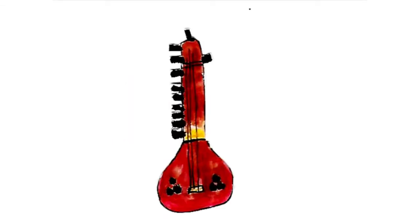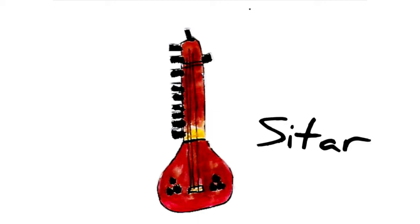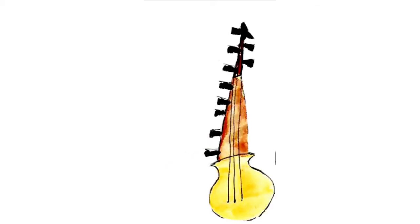Today I will discuss with you some traditional music instruments from India. The first one is the sitar. Sitar can be played just like the usual string musical instrument by strumming it or blocking the string. After sitar, I have the sarod. Sarod is like a best friend for sitar — when people want to play the sarod, they play it alongside with the sitar.